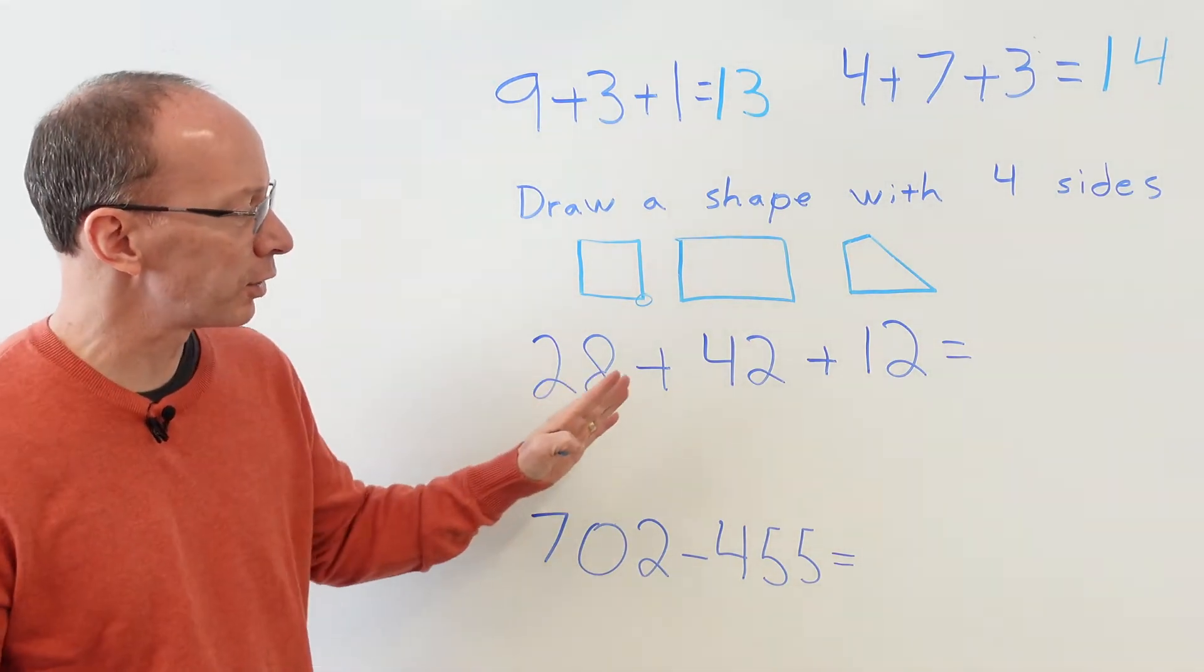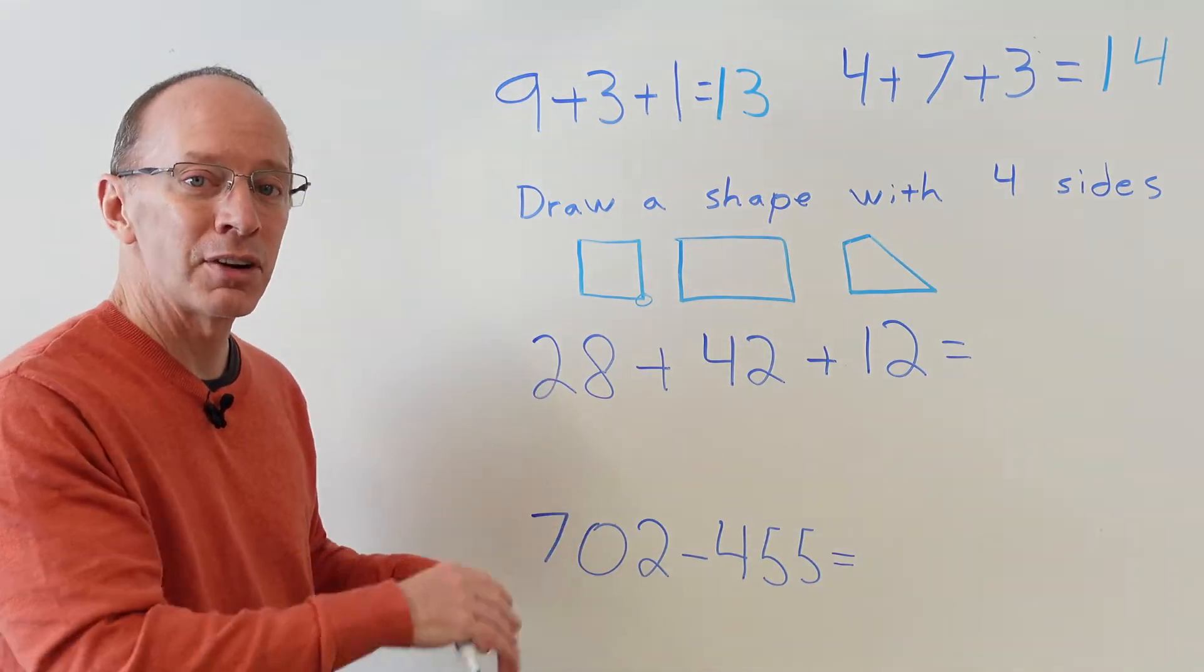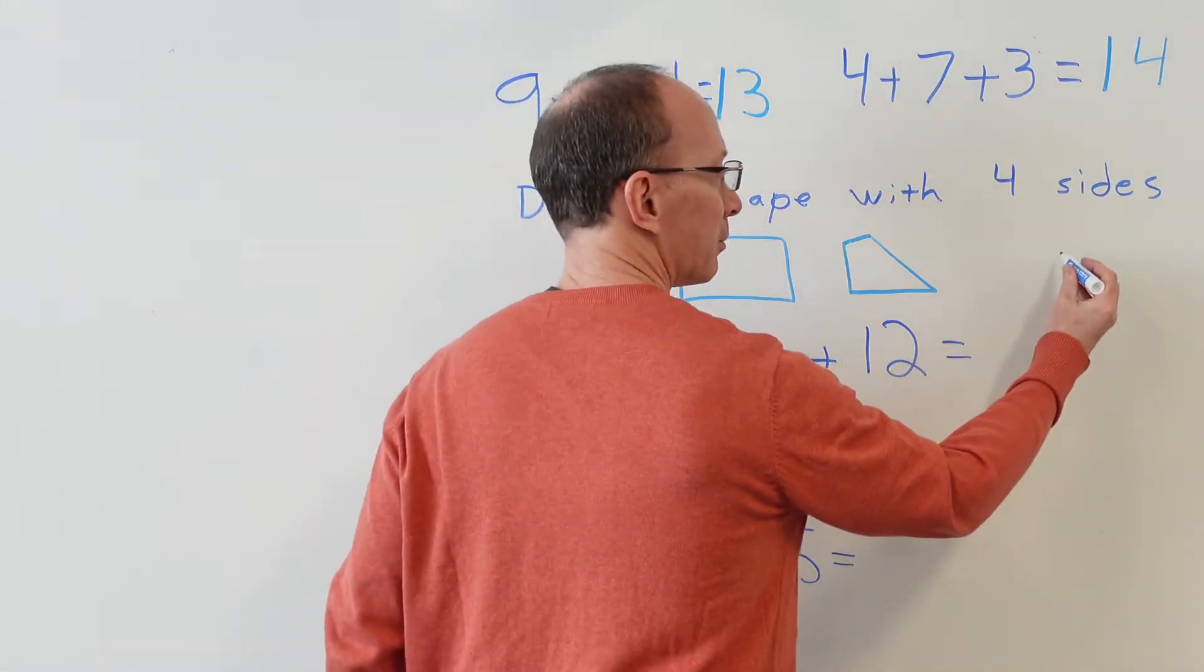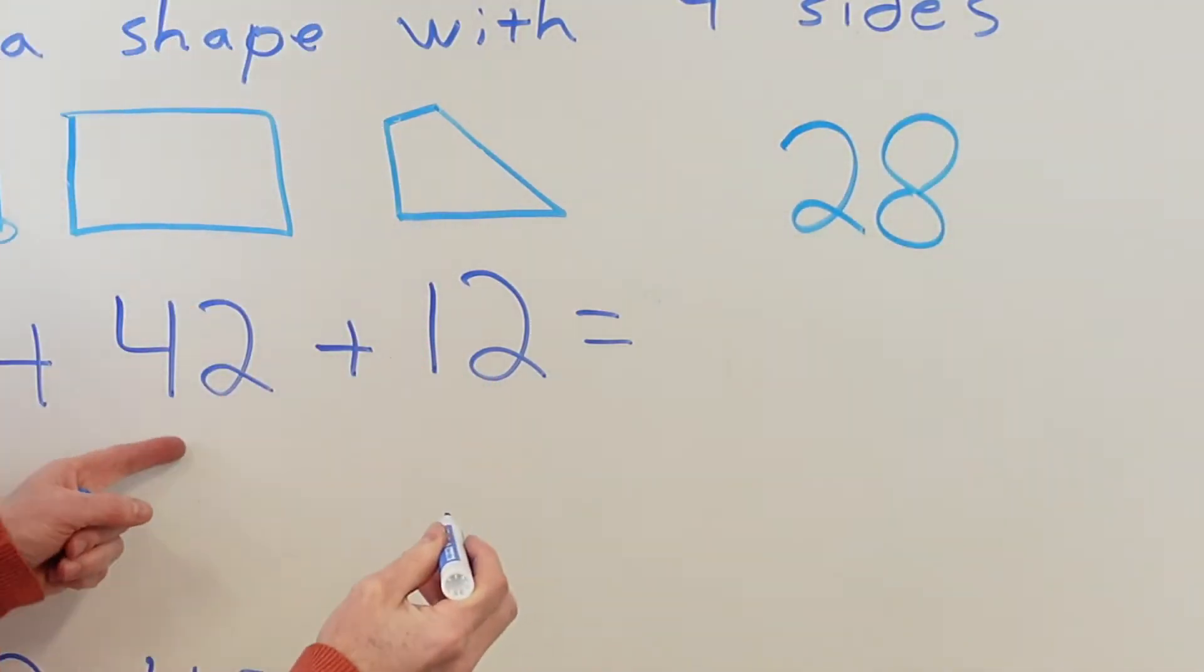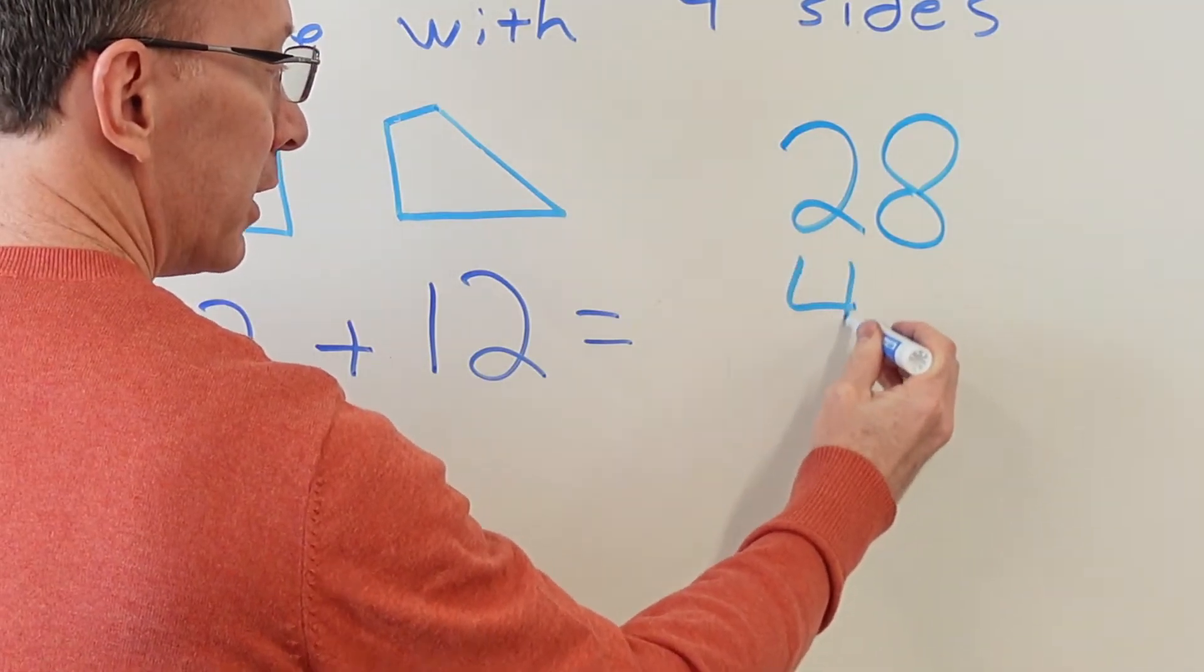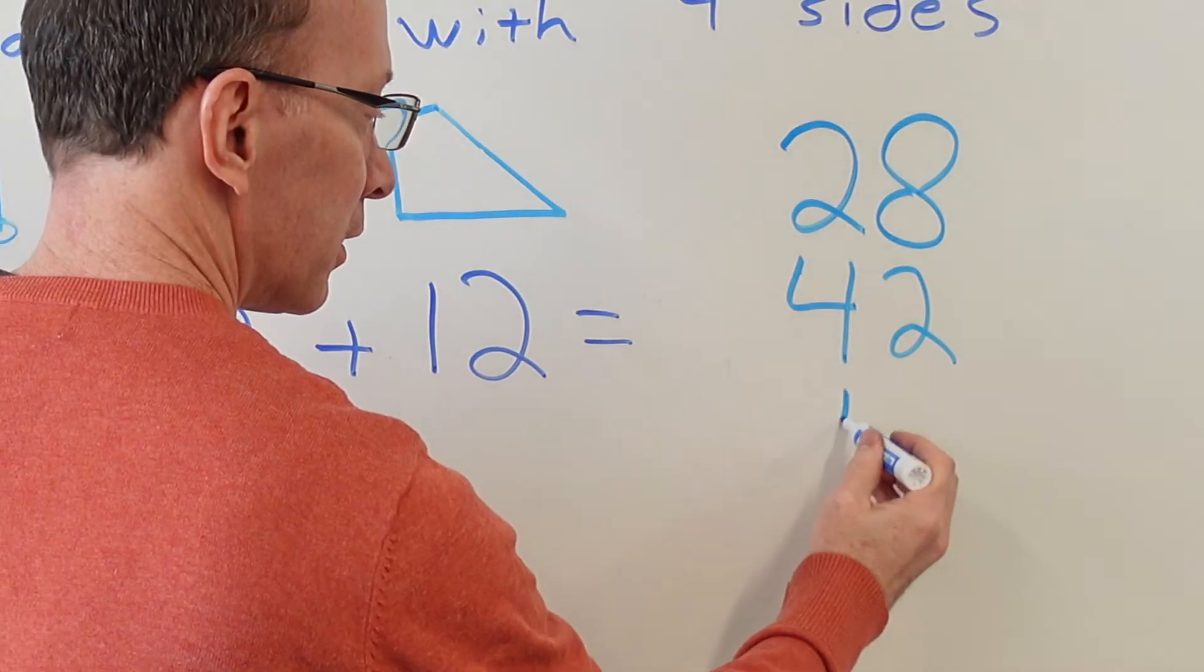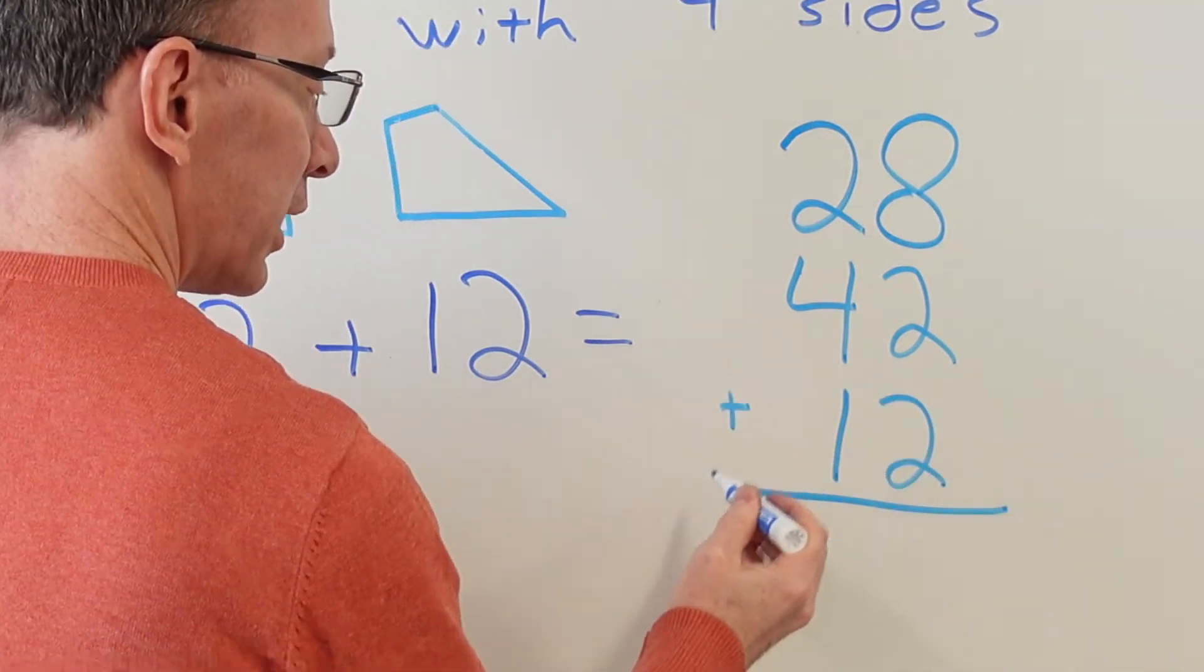All righty, let's take a look right here at this problem here: 28+42+12. For me it's a little difficult to do this problem, so I need to rewrite it. Let's go ahead and rewrite that problem. I'm going to put 28 right here, and then 42 right underneath it, and then the number 12 right here. Put a line here, put our plus sign here.